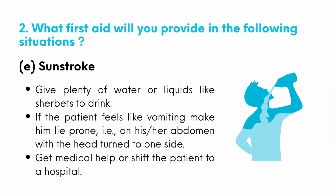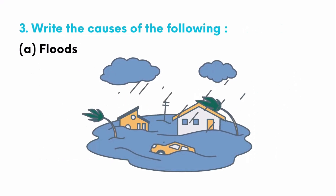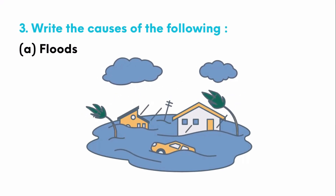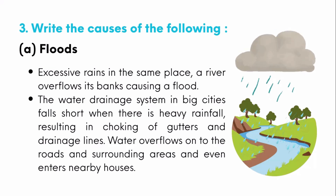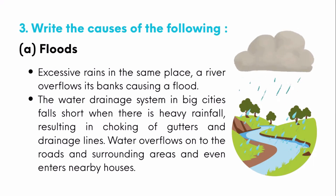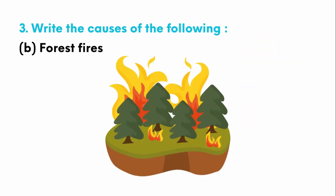Finally, get medical help or take the patient to the hospital. This is the first aid for sunstroke. The next question asks us to write the causes of the following disasters. For floods: excessive rains in some places cause rivers to overflow their banks, causing a flood. The water drainage system in big cities fails during heavy rainfall, resulting in choking of gutters and drainage lines, with water overflowing onto roads and entering nearby houses.